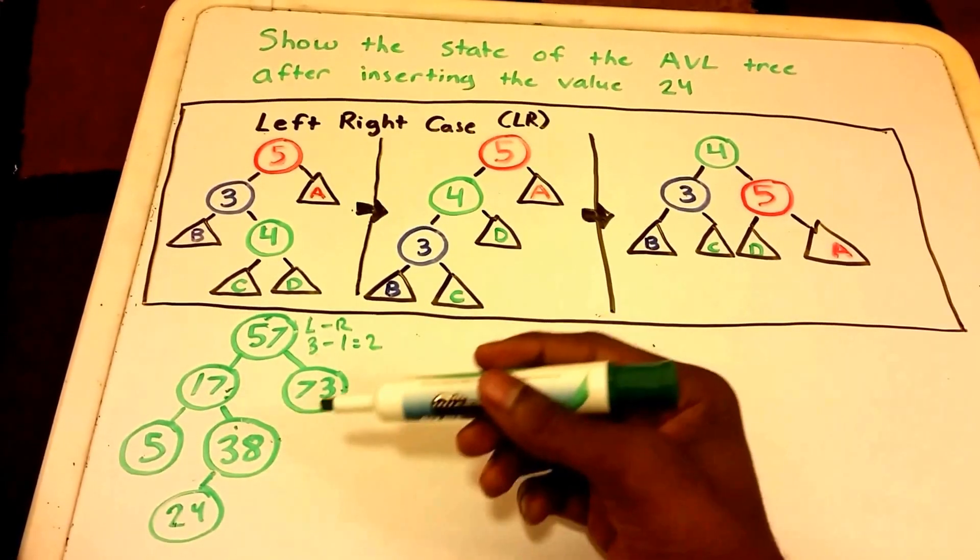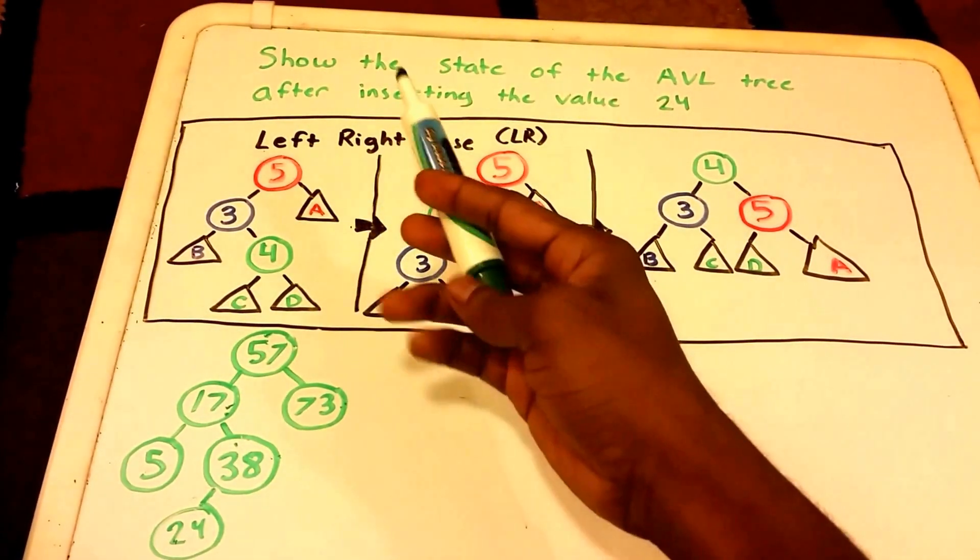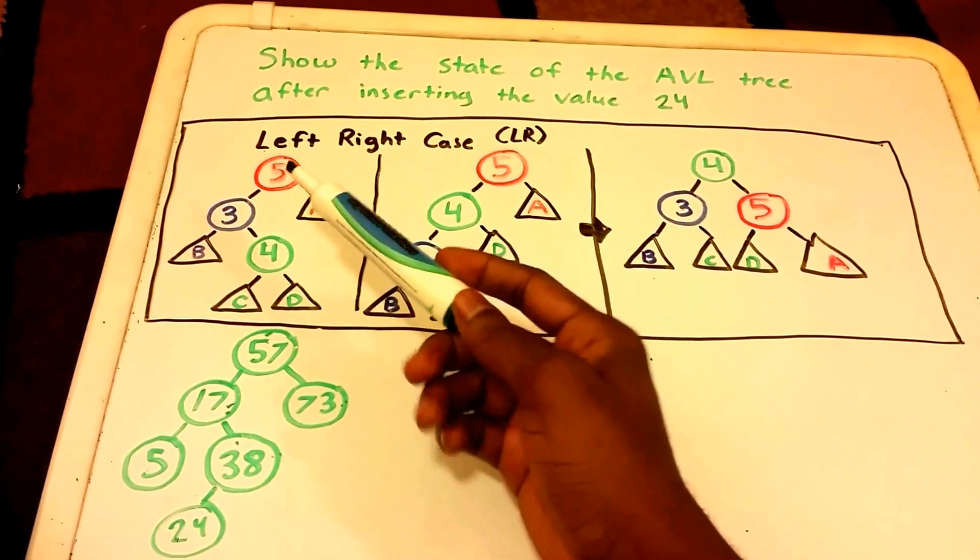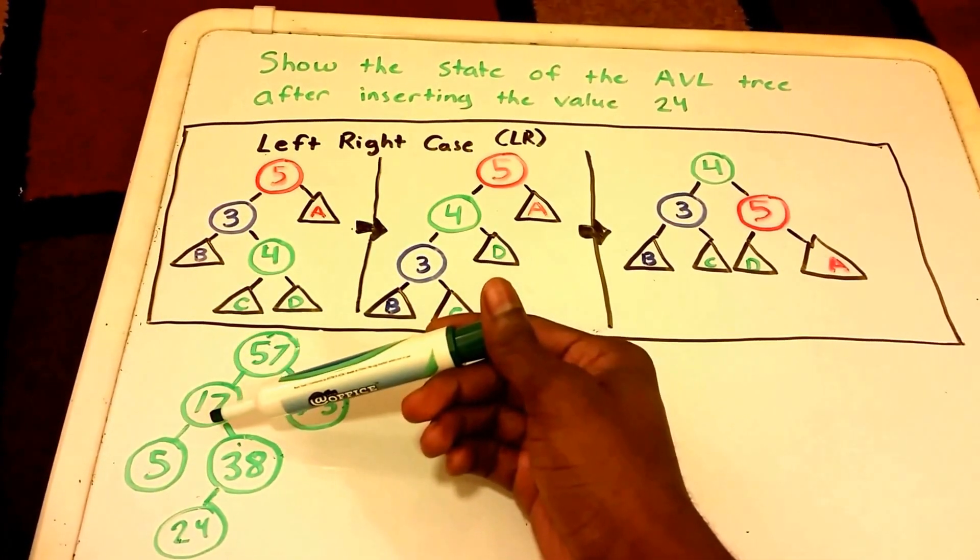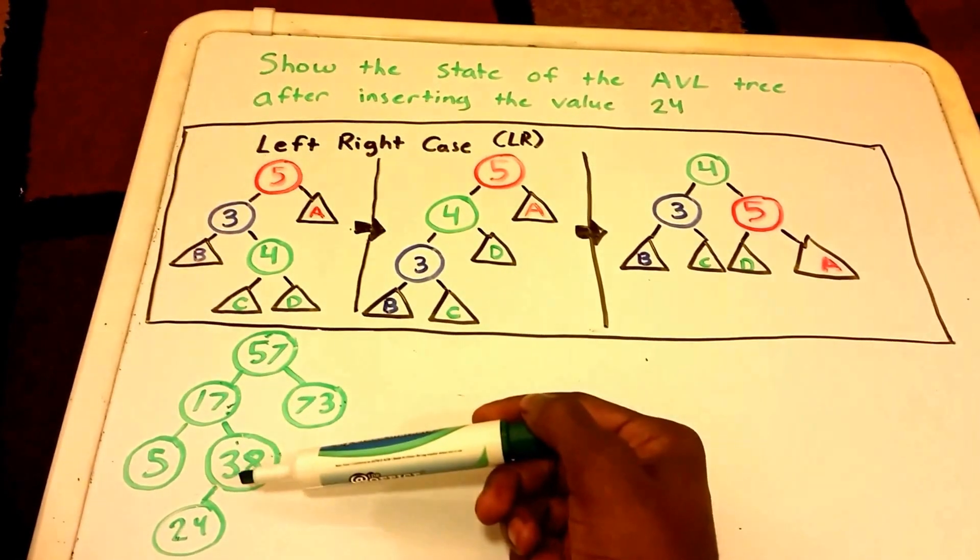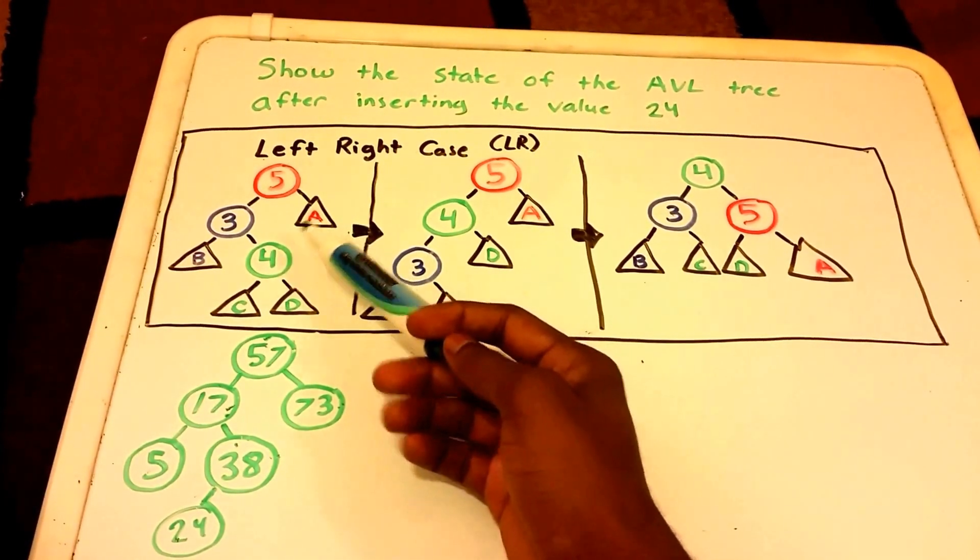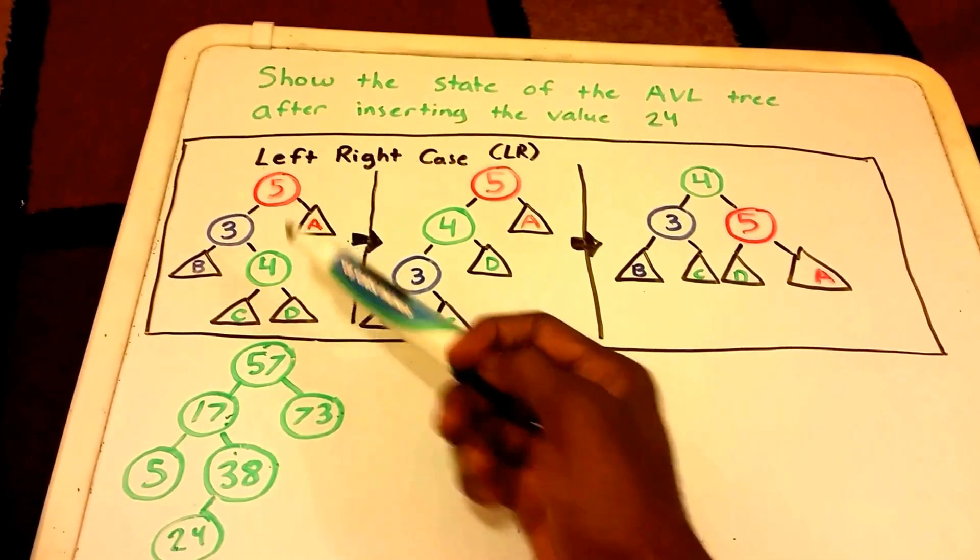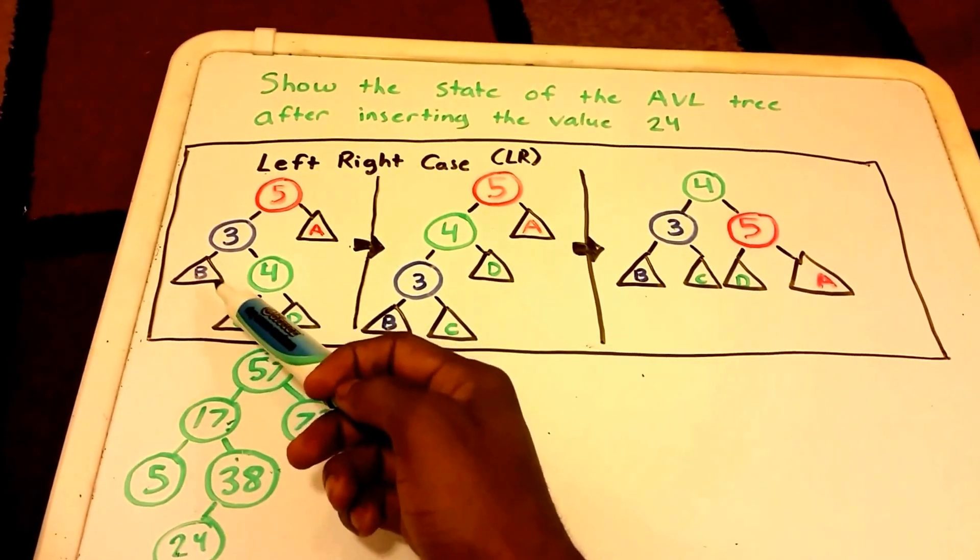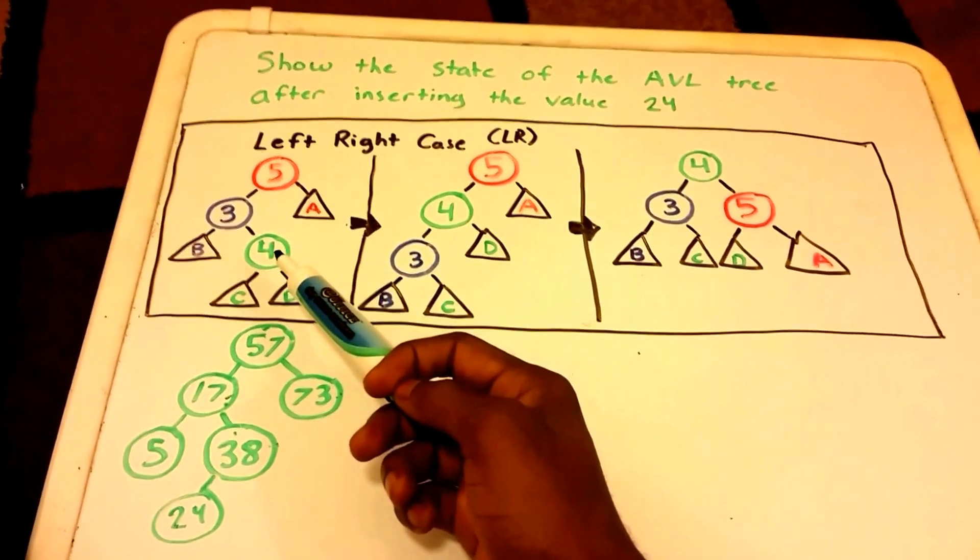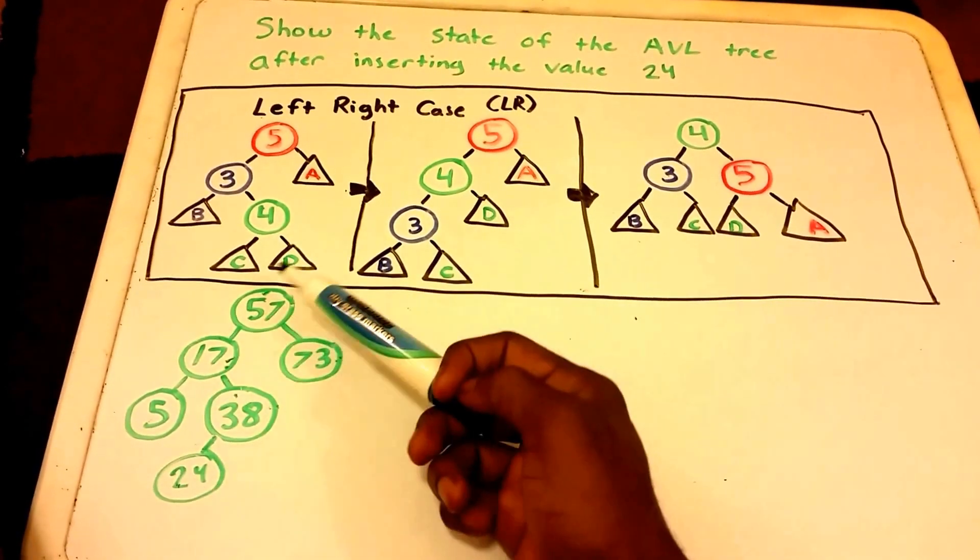In this case we need to do a left-right rotation. We can imagine that our 57 is the number 5, the number 17 is our number 3, and number 38 is our number 4. The right side of 57 or 5 is A, so that would be our 73. The left side of 3 or 17 is B, so that would be our 5 down here. Our 4, which is our 38, will have C which would be our 24, and D which is nothing or null.